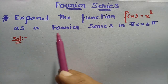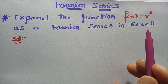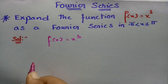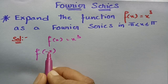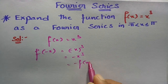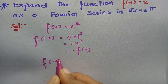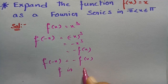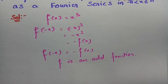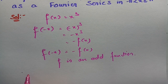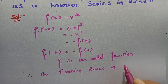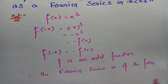We need to expand f(x) = x³ as a Fourier series on -π < x ≤ π. First, we check whether it is an even or odd function. Substituting -x: f(-x) = (-x)³ = -x³ = -f(x). Since f(-x) = -f(x), f is an odd function. Therefore, the Fourier series is of the form f(x) = Σ bₙ sin(nx).